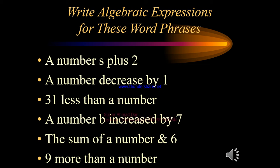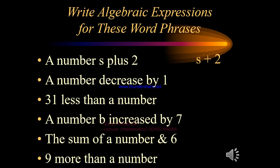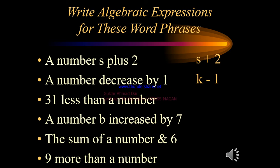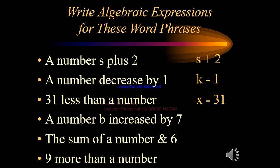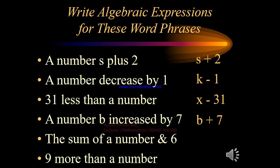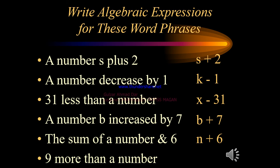Here are some more word phrases. 'A number s plus 2': the algebraic expression is s plus 2. 'A number decreased by 1': the expression is x minus 1 or k minus 1. '31 less than a number': x minus 31. 'A number b increased by 7': b plus 7. 'The sum of a number n and 6': n plus 6 or x plus 6. '9 more than a number': x plus 9 or z plus 9.